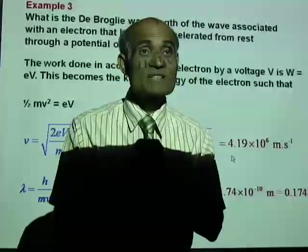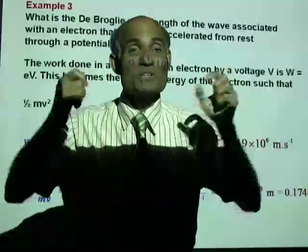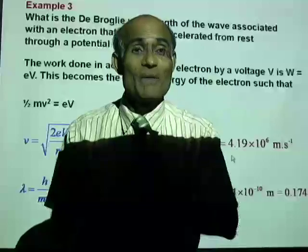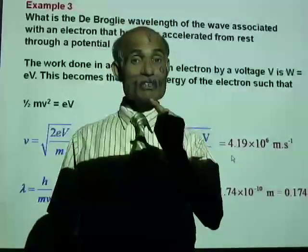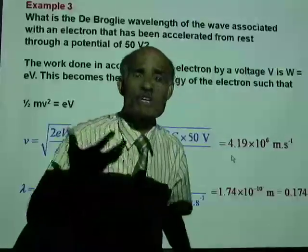Actually, 0.174 nanometer is hundreds of times the diameter of an electron. That means, when compared with the size of the electron, this wavelength is very considerable.